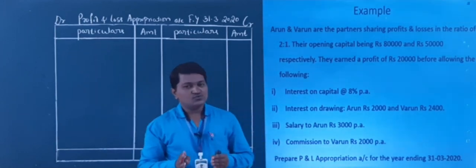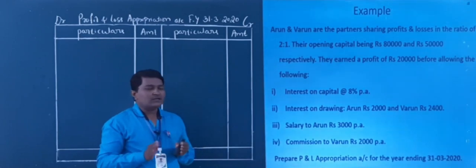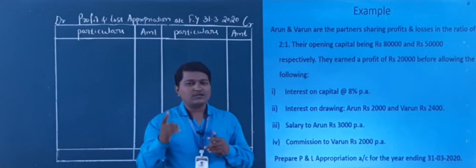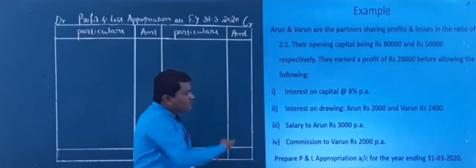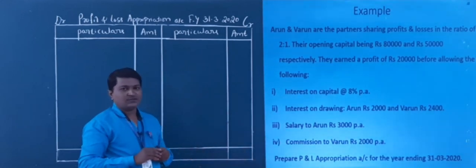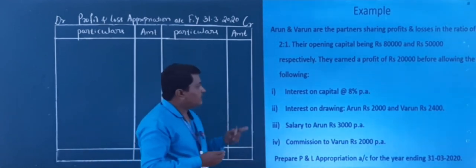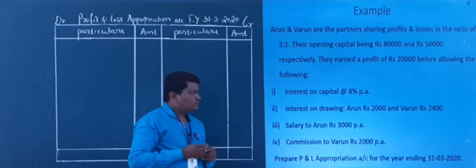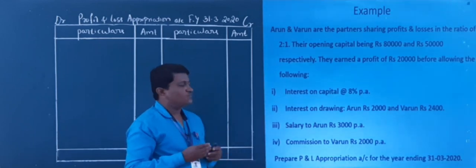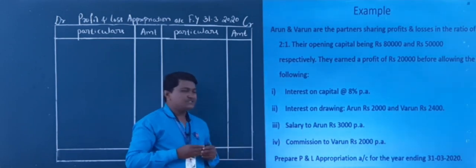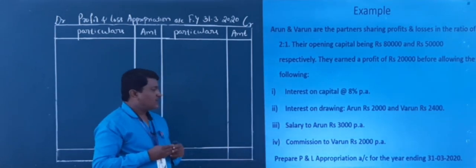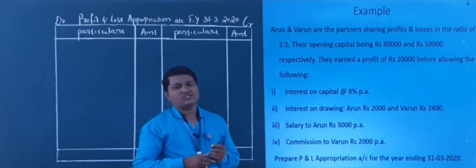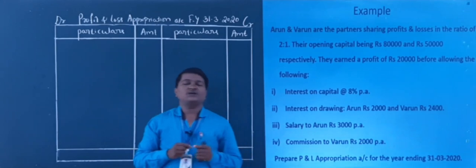They earned a profit of rupees 20,000 before allowing the following adjustments: interest on capital at 8% per annum; interest on drawings — Arun rupees 2,000 and Varun rupees 2,400; salary to Arun rupees 3,000 per annum; commission to Varun rupees 2,000 per annum.